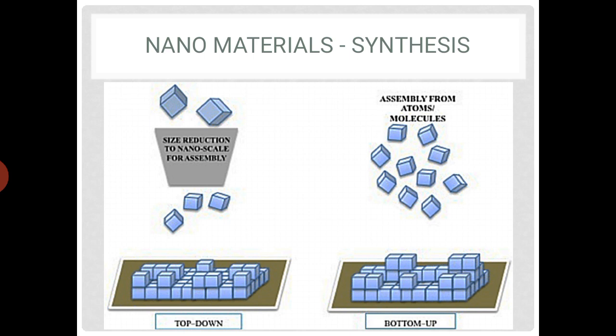Nanomaterials are synthesized using two types of approaches: top-down and bottom-up. As the name suggests, top-down involves size reduction to nano scale, while bottom-up involves assembly from atoms and molecules to nanostructure.